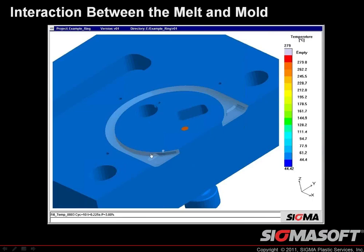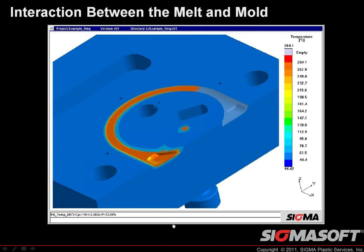Here's an example showing the interaction between the melt and the mold itself. I've sliced through the mold and am injecting polymer in a ring-shaped design. You can see the polymer flowing through the cavity, but also the interaction with the mold itself — the mold temperature around there is actually increasing as the polymer is being injected.